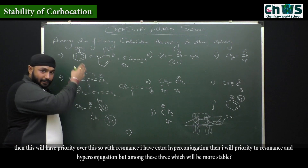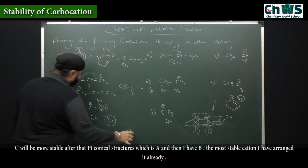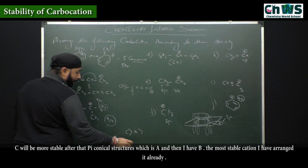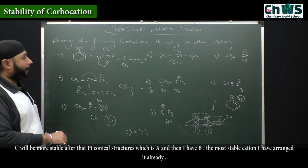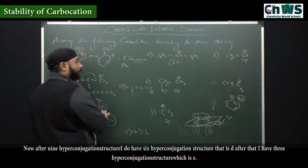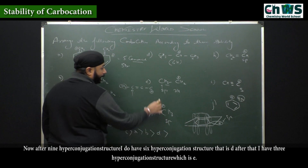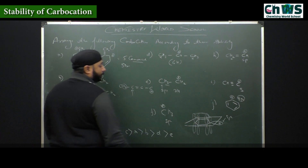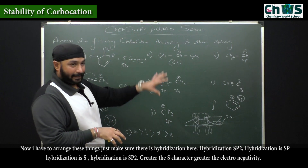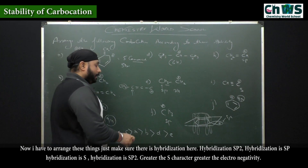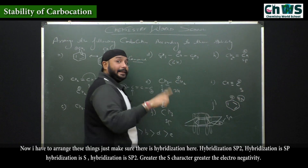Among these, C will be more stable, after that five canonical structures — that is A — and after that B. After nine hyperconjugation structures I have six hyperconjugation structures, that is D; after that three hyperconjugation structures, that is E. Now I have to arrange the remaining ones — check hybridization: sp2, sp, s, and sp2. Greater s character means greater electronegativity.